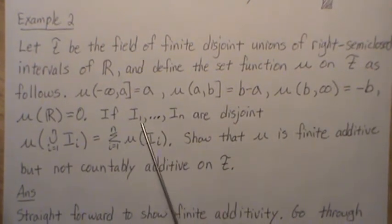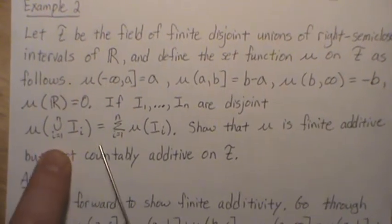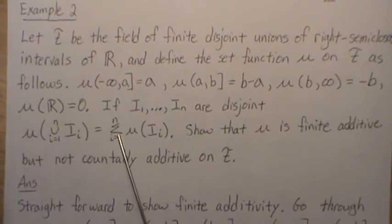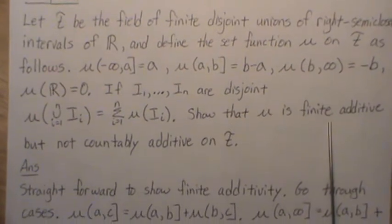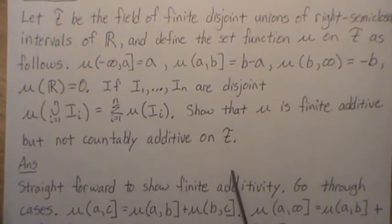Also, the measure of the entire real number line is zero. So now, if I₁ through Iₙ are disjoint, and the measure of the union of these disjoint sets is equal to the sum of the individual measures, show that μ is finite additive but not countably additive on F.